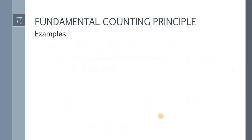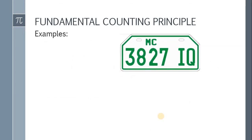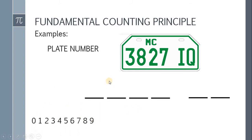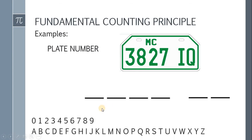Let's have another example — you're probably familiar with this: a plate number. The format has 4 digits for numbers and 2 slots for letters. For the digits, we can use 0 to 9, and for the letters, we can use A to Z — that's 26 letters. With no restrictions, each digit position has 10 options, and each letter position has 26 options.